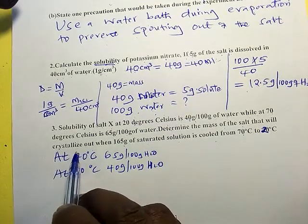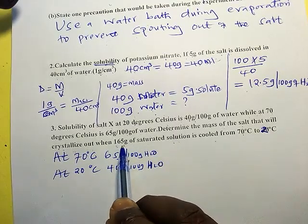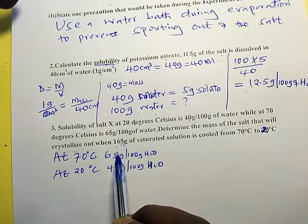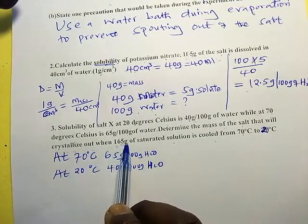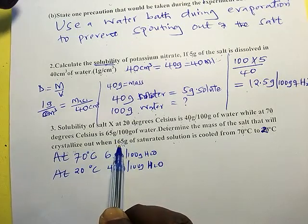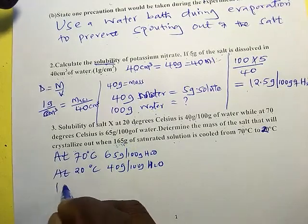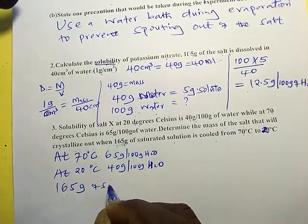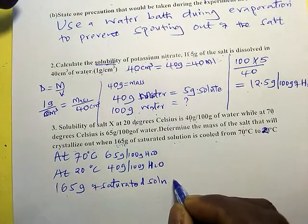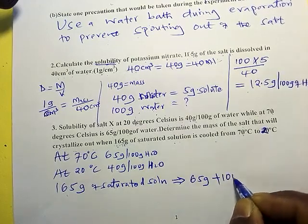But remember we have here a saturated solution. This saturated solution contains a given mass of solvent and solute. From the way this is 165 grams, it means 65 grams of the solute was dissolved in 100 grams of water. So it's important to understand, 165 grams of saturated solution implies that 65 grams was dissolved in 100 grams of water.